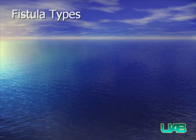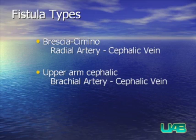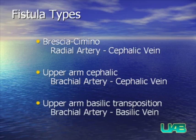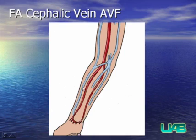When looking at the different types of fistulas, we should review the different anatomic variations. A Brescia-Cimino fistula is an anastomotic communication between the radial artery and the cephalic vein. The first example shown is a forearm cephalic vein fistula, which takes an end-to-side anastomosis of the cephalic vein at the wrist into the radial artery, allowing for vascular access within the forearm draining vein once completed.